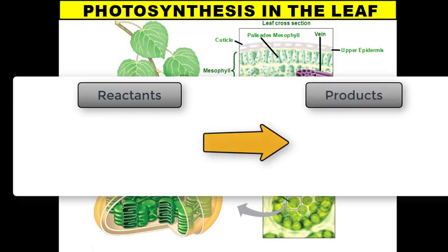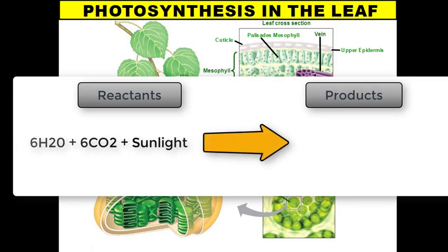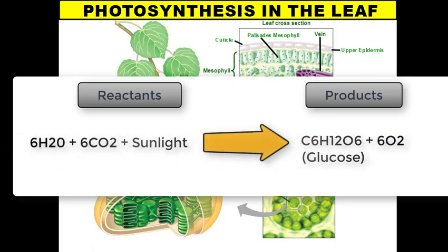Our reactants for photosynthesis include six molecules of water, six molecules of carbon dioxide gas, and solar energy or sunlight. Once you get those three reactants together inside the chloroplast of a plant — which is where photosynthesis actually happens — you get two products: one molecule of glucose, typically written as C6H12O6, and six molecules of oxygen. So this is the formula for photosynthesis.